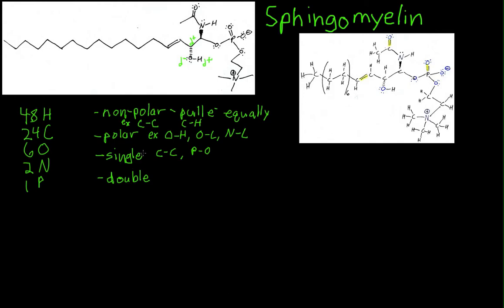We also have double bonds, represented by two lines. Here I've highlighted them — we have one, two, three double bonds in this molecule: carbon-carbon, carbon-oxygen, and phosphorus-oxygen. These double bonds are stronger than single bonds, and the two atoms are closer together in a double bond than in a single bond — the double bond just makes the two atoms come closer together.